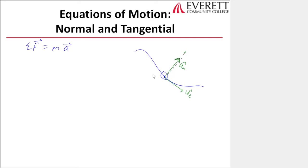We have UT and UN, and the third one is the binormal, UB—out of the page in this case. So UT, UN, and UB are our three new unit vectors, just like I, J, and K. The force vector in normal-tangential coordinates is: some force in the tangential direction times UT, plus force in the normal direction times UN, plus force in the binormal direction times UB.